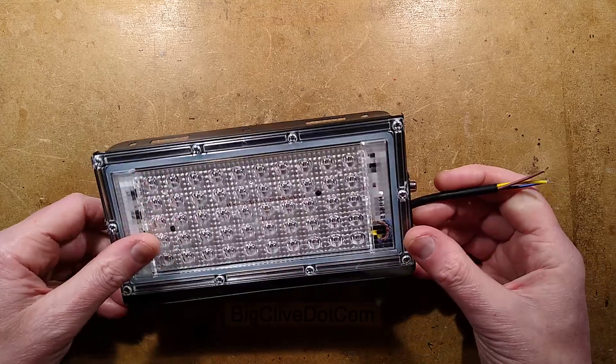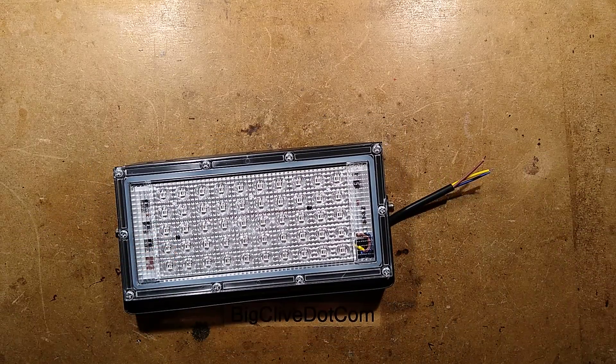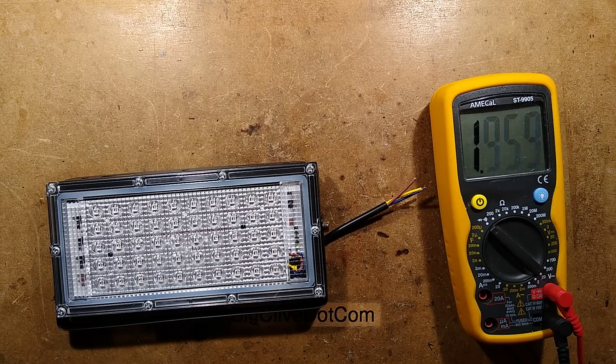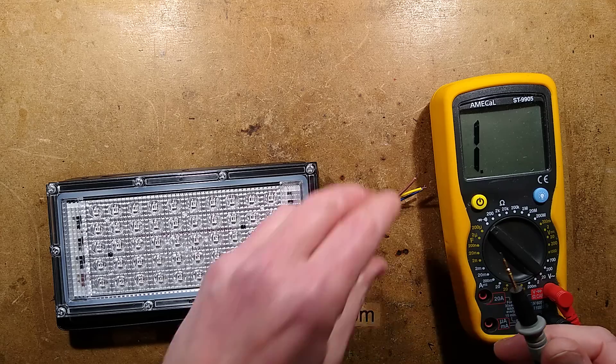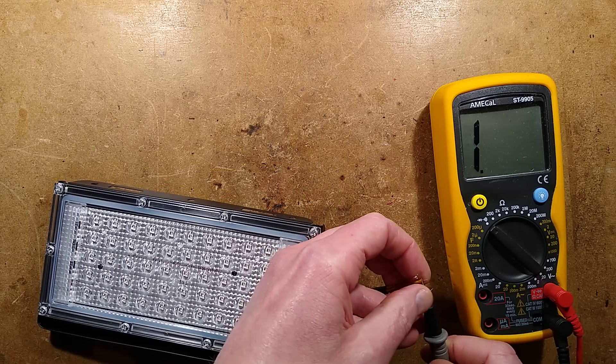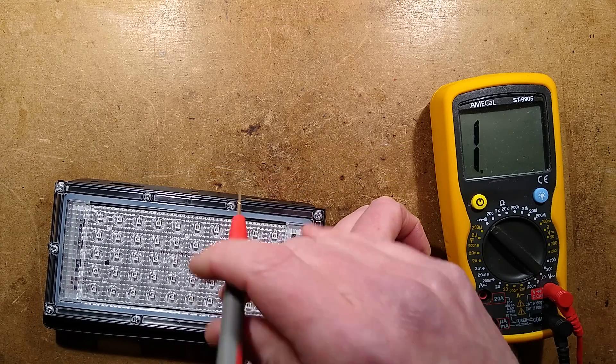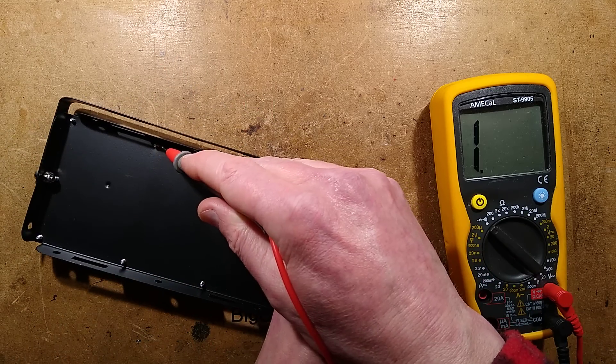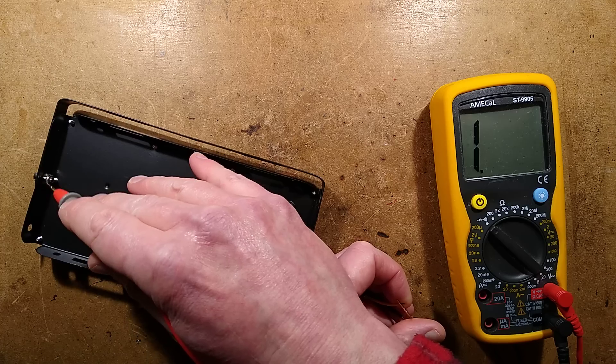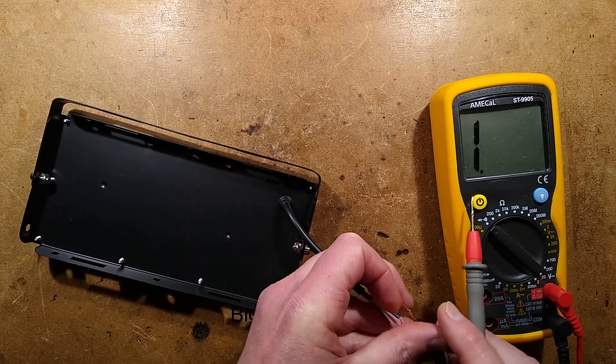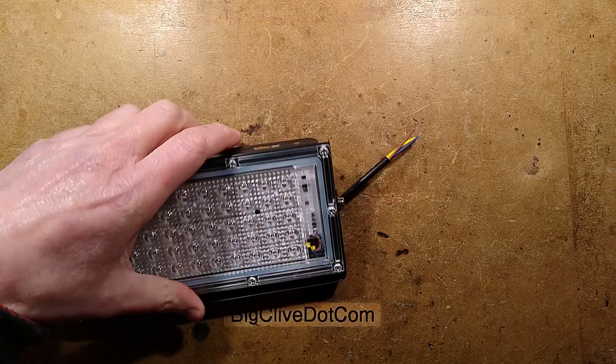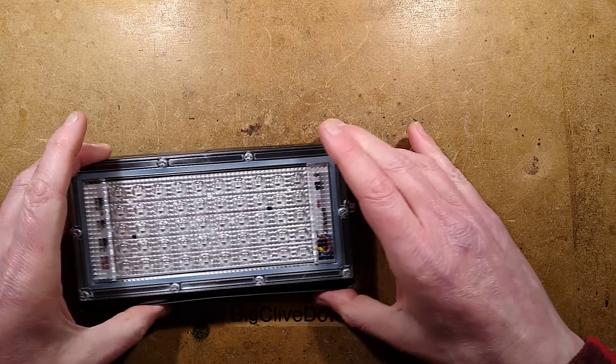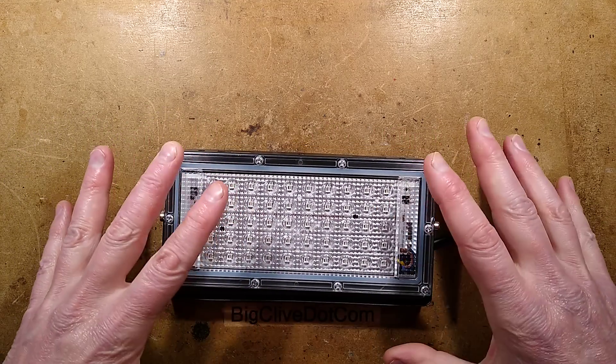The first test I did on this one, given its source, was I got the test meter in. As you can probably guess what I'm going to do, I went from the earth connection. Nothing. Earth. Two screws. Nothing. No earth connection to this one. So the earth wire is fake as it is in so many of the products that are imported directly from China without going through the formal channels.